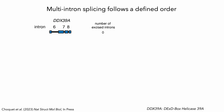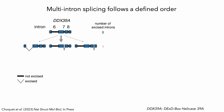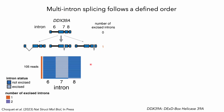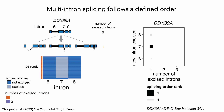I'll use introns six to eight of the gene DVX39A to walk you through our analysis strategy. Partially spliced reads are the ones that contain information about splicing order. So we start with all splicing patterns in which only one intron has been excised, and we count the number of reads that match each of these patterns. These counts are represented as a heat map, where each line represents one read and each column represents one intron. Of these three possible splicing patterns, you can see that one is much more frequent than the other two. So we take this information and start building our splicing order plot, where the x-axis represents the number of introns that have been excised and the y-axis indicates the identity of the newly excised intron. You can see that the first intron to be excised is usually intron seven.